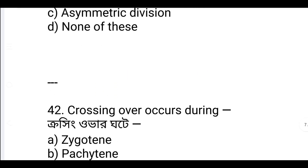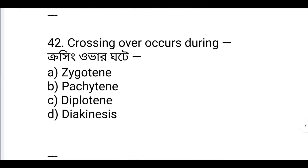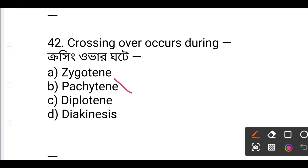Question: During which phase does crossing over occur? The answer is option B — pachytene. Pachytene is the phase involving homologous chromosomes and genetic recombination.